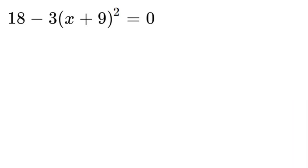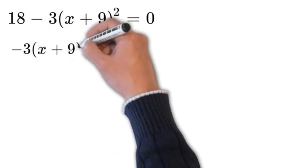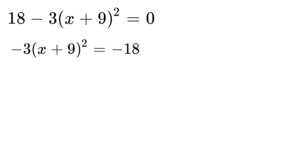So the first thing we are going to do is subtract 18 from the left side and move it over to the right side. So that will look like this. We will be left with minus 3 times x plus 9 squared is equal to negative 18.